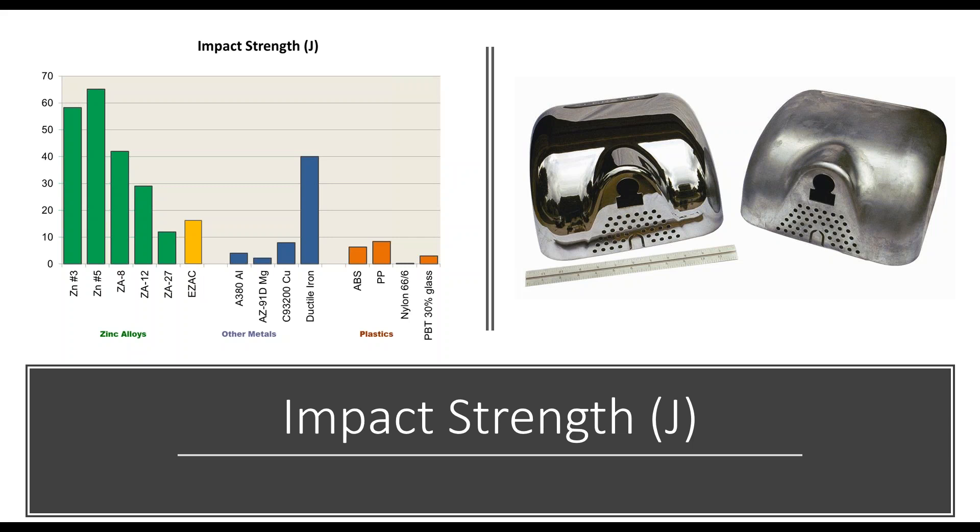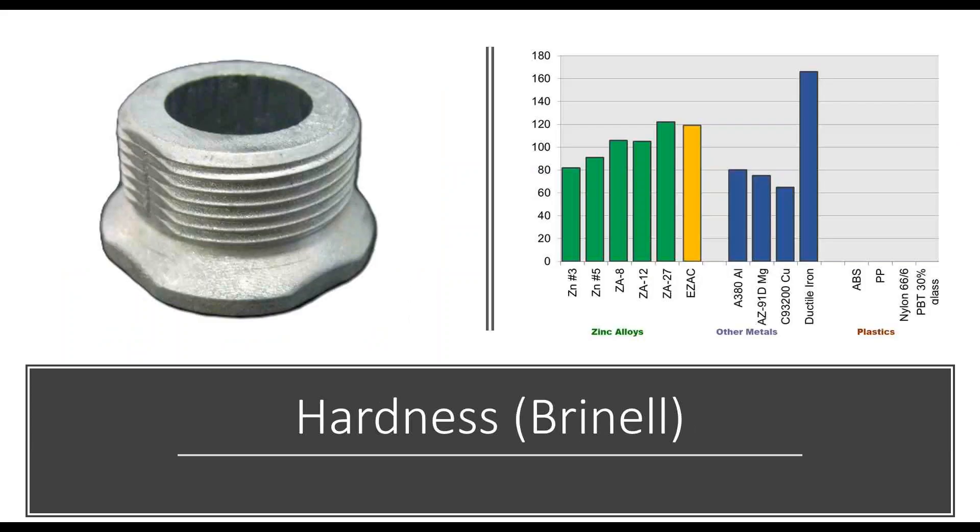As shown in this slide, zinc alloys all have improved impact strength compared to other cast alloys and plastics. The example here is the Xlerator hand dryer, chosen in Zamak 3 for its impact strength as well as its ability to be electroplated.